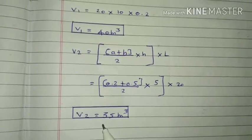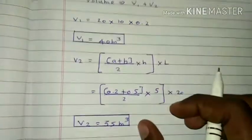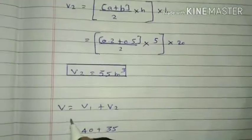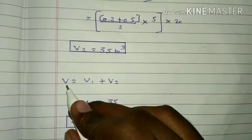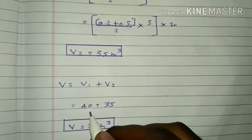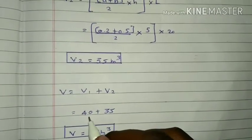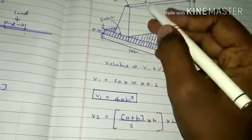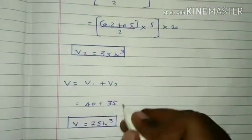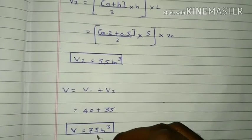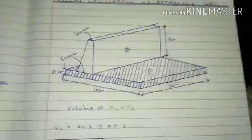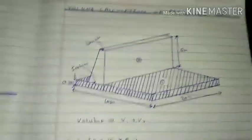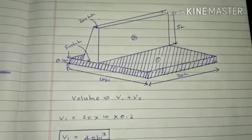V2 is equal to 35m³. V1 is calculated by pressing by 2. The total volume equals V1 plus V2 plus V3 plus V4.